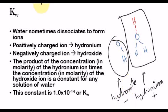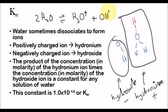So basically, in water we have this constant equilibrium. In pure water, most water molecules remain in the typical form H₂O, but sometimes they dissociate and form hydronium — H₃O⁺ — and hydroxide — OH⁻. This is an equilibrium reaction. Again, only about 1 in 500 million water molecules will actually dissociate and create hydronium and hydroxide.